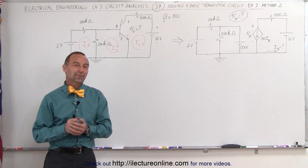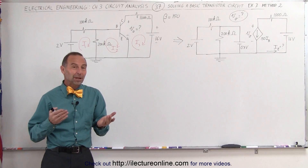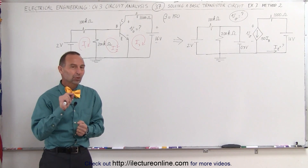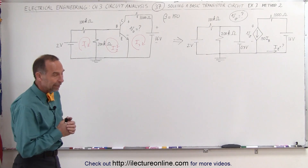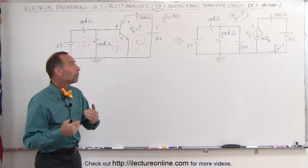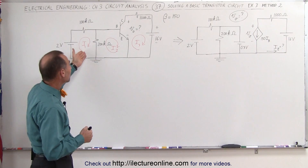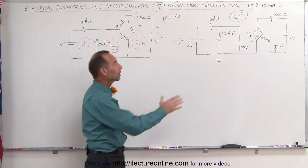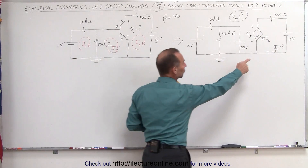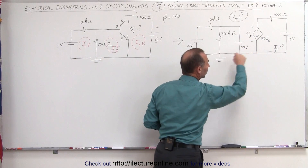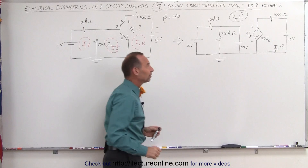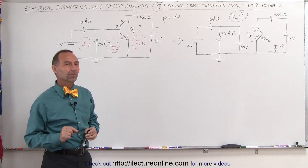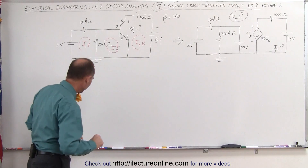Welcome to ElectronLine. Here we have the very same problem we did in the previous video, but we're going to do it with a different method. In the previous video, we used the mesh analysis method. Here we're going to draw the equivalent circuit, so notice that this is the equivalent circuit for the transistor, and we're going to use the node analysis method to solve this one.